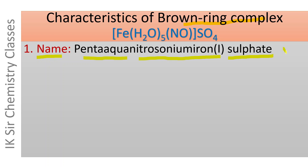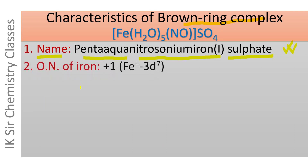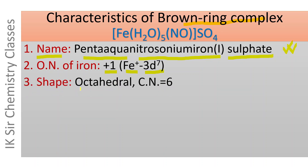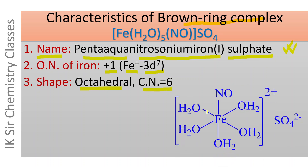Students generally make mistakes in writing the name of this compound. The oxidation number of iron is +1, and the electronic configuration of Fe+ ion present in the brown ring complex is 3d7. The shape of the complex is octahedral and the coordination number is 6, since Fe+ ion is attached to 6 ligands.